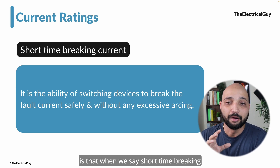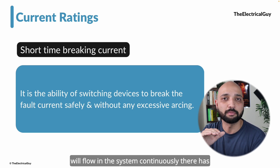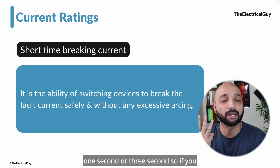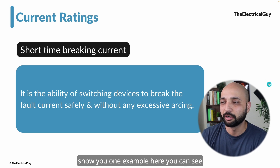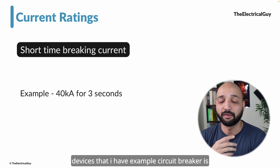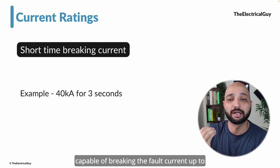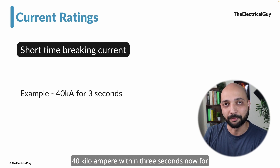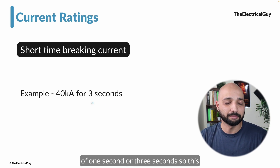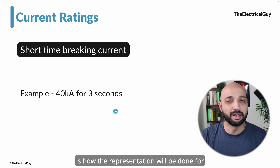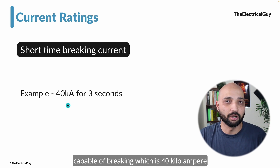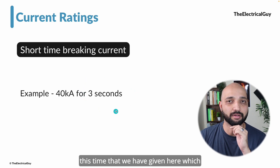One important thing to remember: when we say short time breaking current, we do not mean the current that flows continuously. There has to be a time limitation, and generally that time limitation is one second or three seconds. For example, a rating of 40 kilo ampere for three seconds means the switching device — for example, a circuit breaker — is capable of breaking the fault current up to 40 kilo ampere within three seconds. The circuit breaker will break the current very quickly in a few milliseconds, but to be on the safe side we assign a rating of one or three seconds.